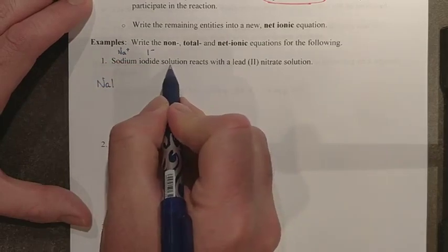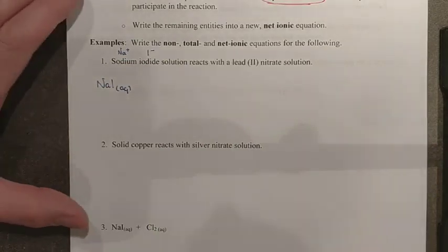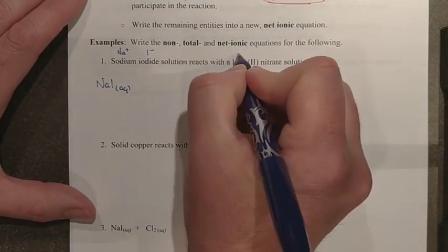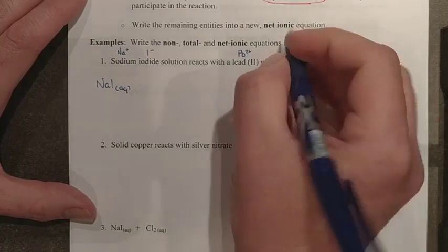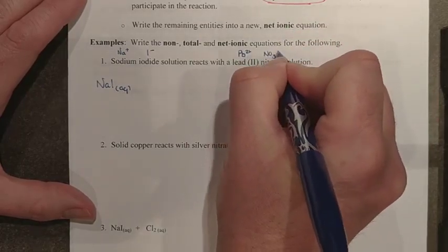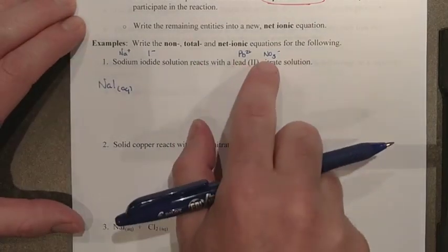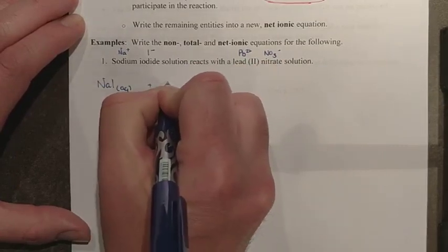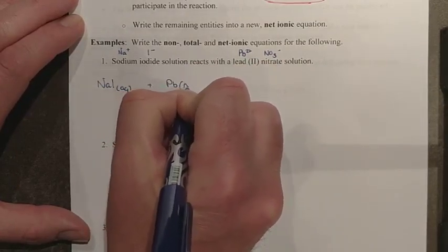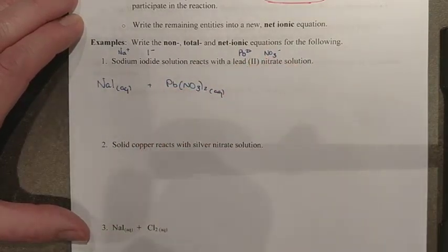I'm told it's a solution so I'm going to just go straight ahead here and say that it's an aqueous state. Here I have lead 2 so that's Pb2+. Nitrate is one of our polyatomic ions NO3- and so you can see the 1 to 2 ratio here that we're going to need and so for this one lead nitrate as we're told it's a solution is also aqueous.